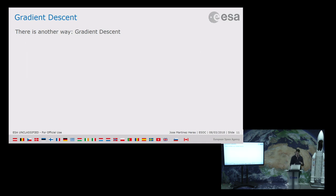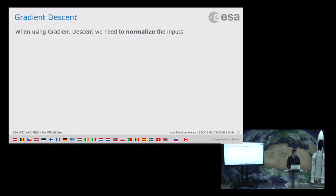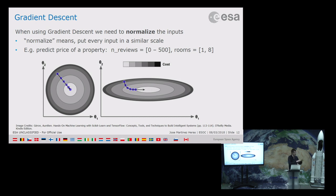In two dimensions, the cost surface looks like a rounded bowl projected onto the floor. When using gradient descent, it is important to normalize the features — that is, put them on a similar scale. For example, if the number of reviews ranges from 0 to 500 and the number of rooms from 1 to 8, the bowl becomes elongated, making convergence much harder. Normalizing the features gives us a nicely rounded bowl shape that converges more easily.